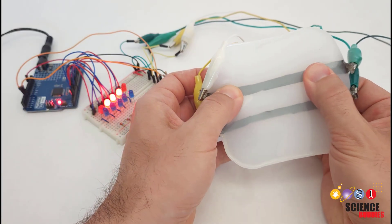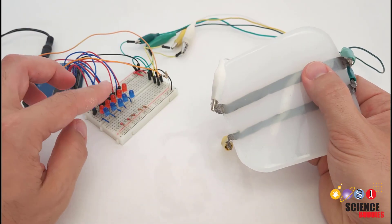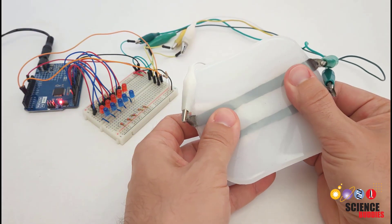The electrical resistance of these strips changes when you pull on them, and that change can be measured by a microcontroller to control something like the LEDs you see here, or even a motor.